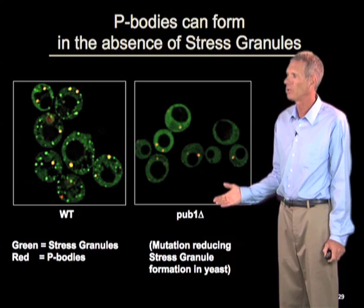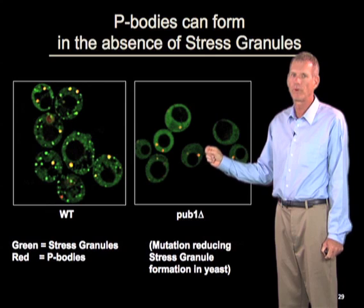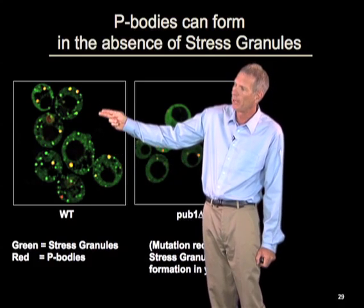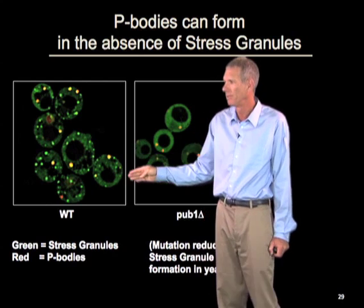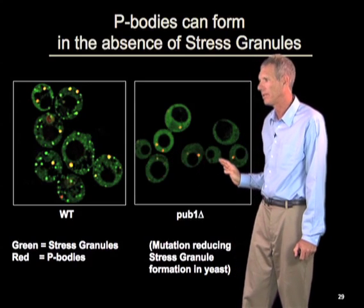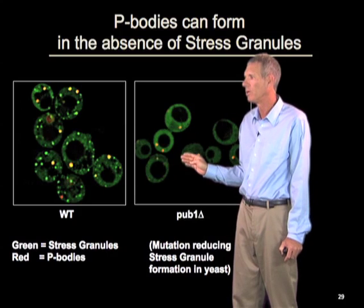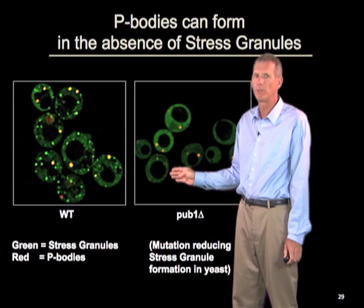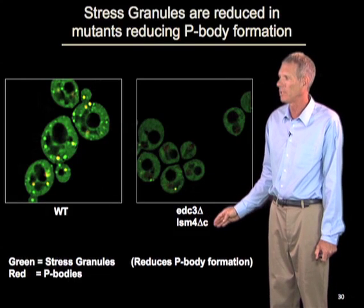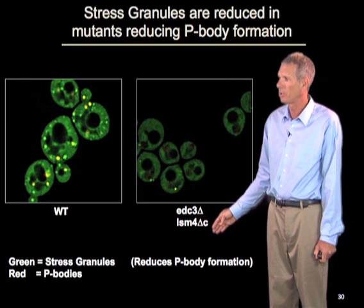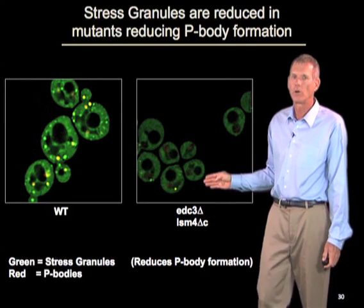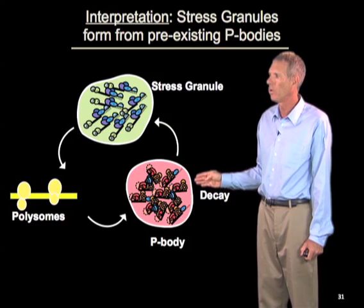Using yeast cells with mutations preventing formation of either stress granules or p-bodies, and starting from a wild-type cell where you can see lots of stress granules in green and many p-bodies in red generally overlapping — if you remove the ability to form stress granules, you still make p-bodies of about the same number, brightness, and size. So mutations reducing stress granules do not affect the formation of p-bodies, at least in yeast cells. However, doing the converse experiment removing p-bodies — using those mutations I described earlier, the EDC3 protein gone and deleting the prion domain on LSM4 — now you do not make any p-bodies, and you also do not make any stress granules. Our interpretation is that stress granules form from preexisting p-bodies.